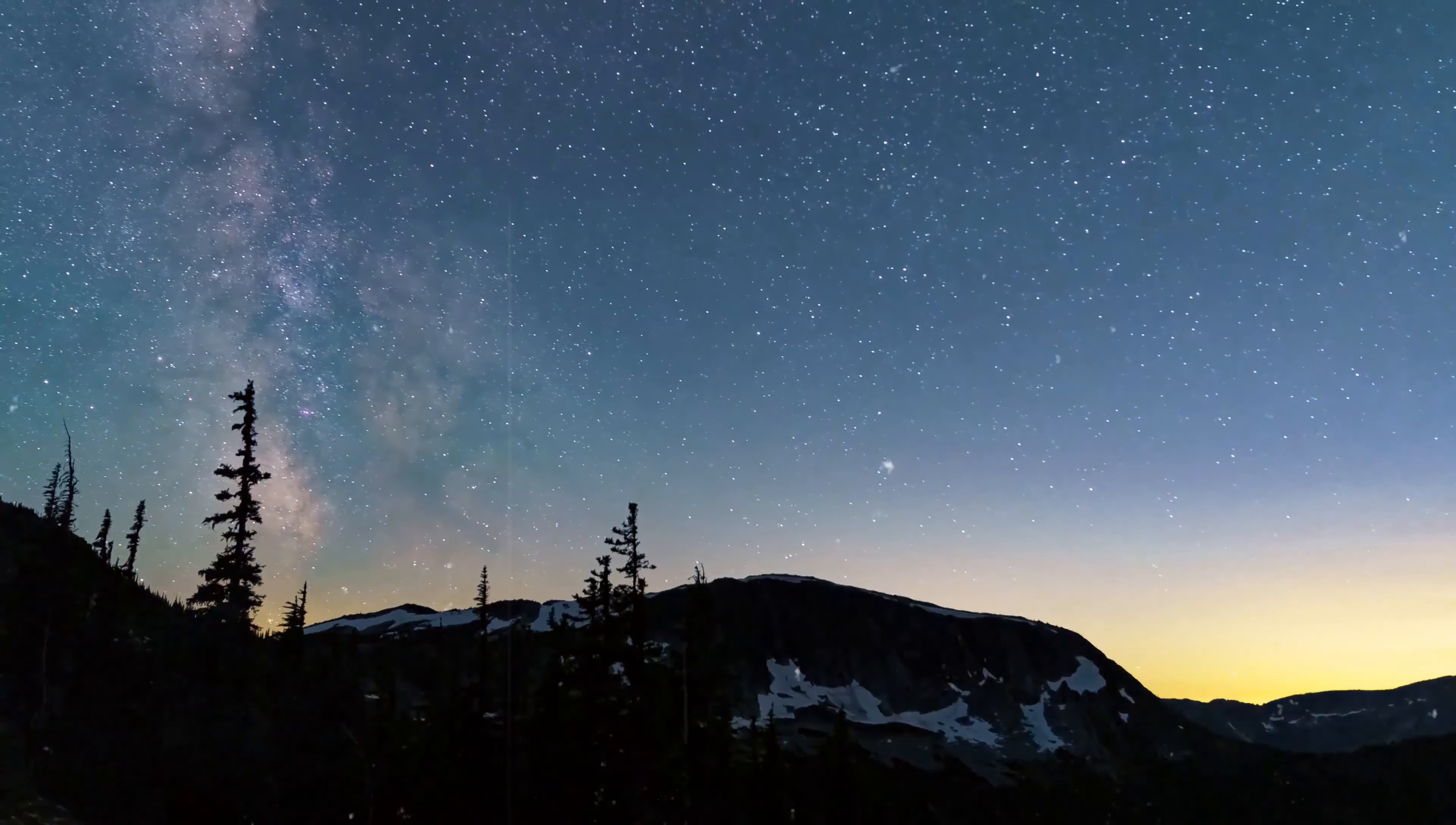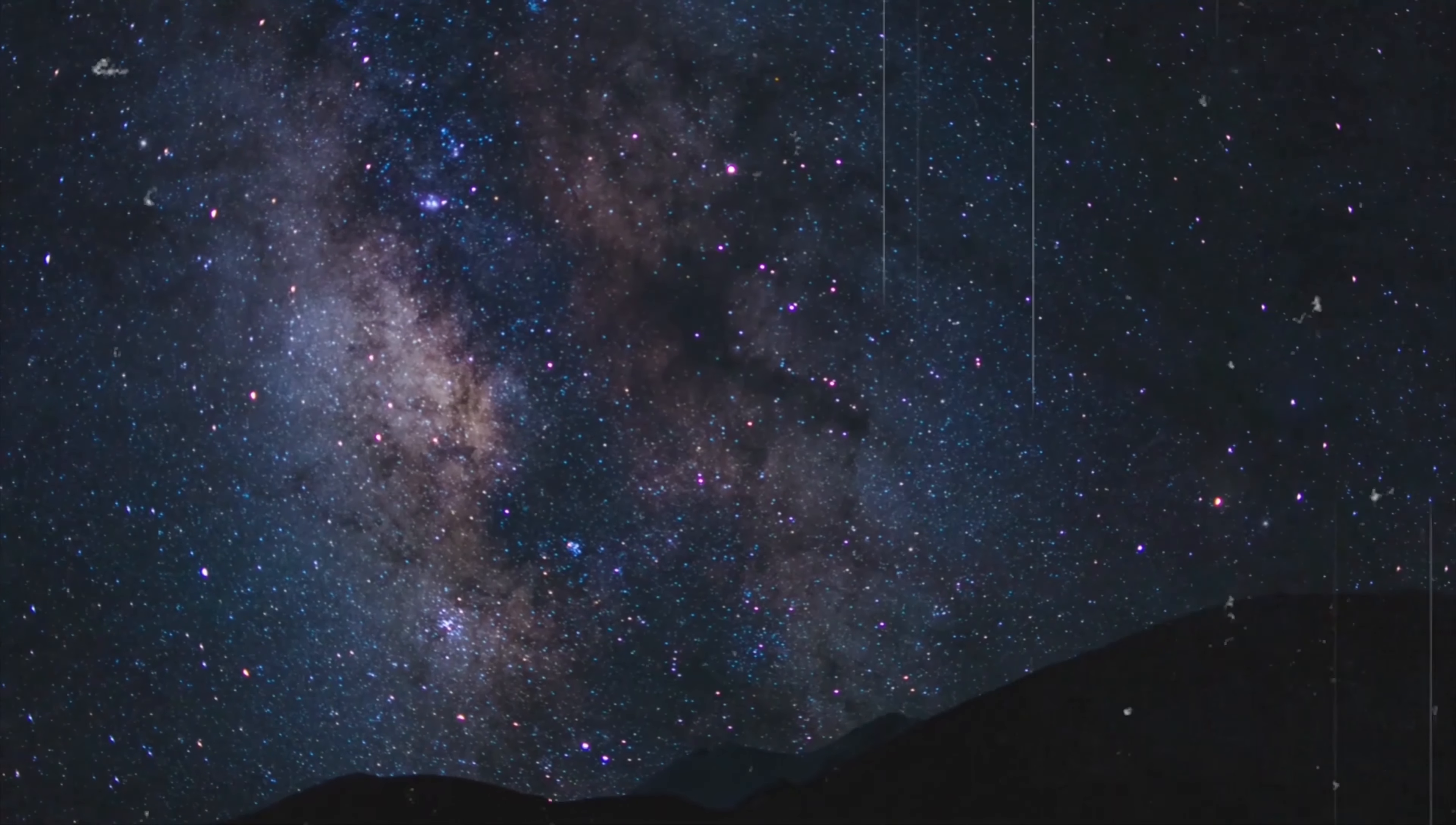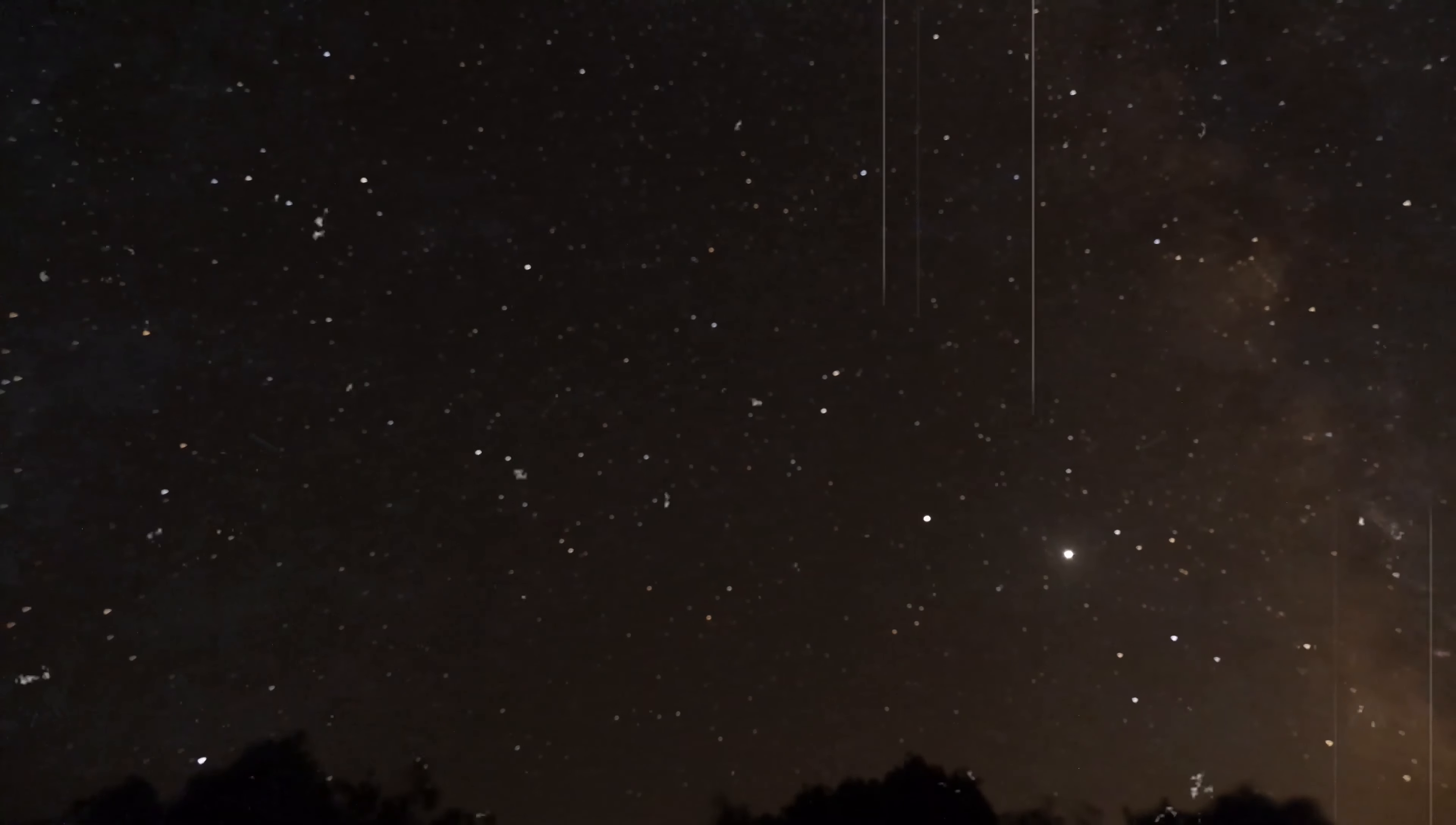From the confines of a humble room to the distant galaxies visible only through colossal telescopes, everything illuminated by light falls within the purview of the observable universe. Currently, the observable universe spans a radius of 46.5 billion light-years. However, the universe's age is a mere 13.8 billion years. How do we reconcile this apparent disparity?